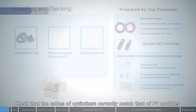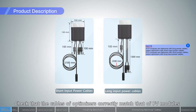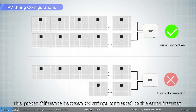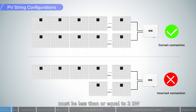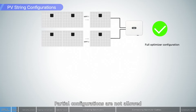Check that the cables of optimizers correctly match that of PV modules. The power difference between PV strings connected to the same inverter must be less than or equal to 2 kilowatts. Otherwise, the inverter may be derated. Partial configurations are not allowed.